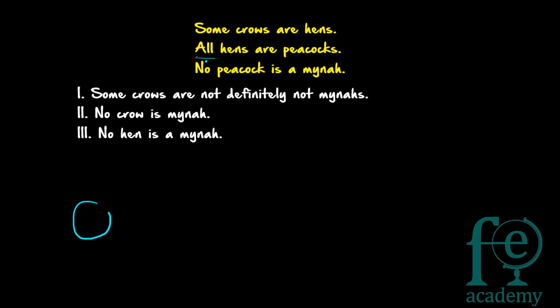Let hens be represented by this circle. Since all hens are peacocks, the hens circle will come totally inside the peacock circle. The pink circle represents peacocks and the blue circle represents hens. So the hens circle comes wholly inside the peacock circle.